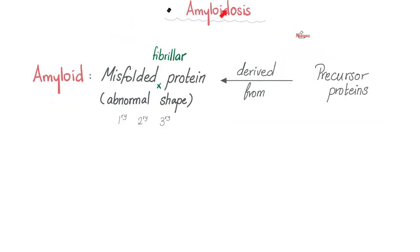Amyloidosis is a condition of amyloid deposition. Where do you get the amyloid from? It's derived from precursor proteins. These precursor proteins give me a protein that is misfolded, with an abnormal shape. Recall from your biochemistry that proteins have primary, secondary, tertiary, and sometimes quaternary structure. If these are abnormal, you end up with misfolded fibrillar protein with abnormal shape — this is what we call amyloid. When it gets deposited in different tissues, we call it amyloidosis.